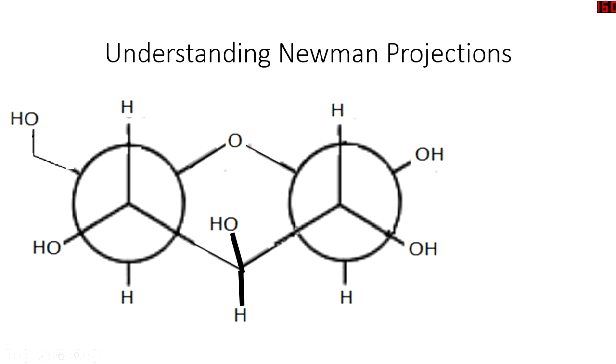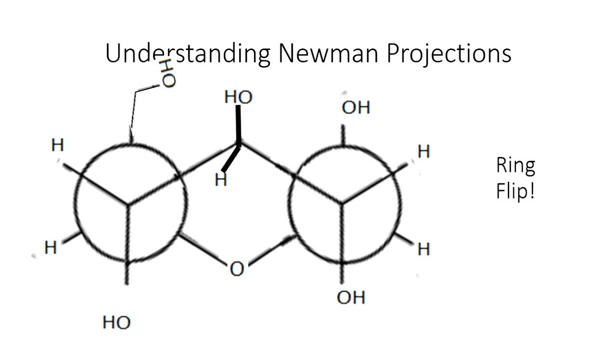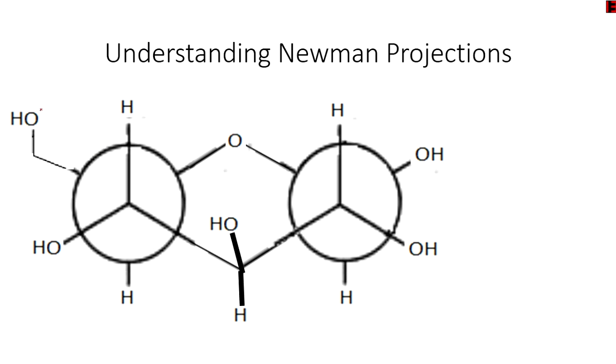Now watch where those go. So the hydrogens are axial, watch where they go. They're now equatorial. And our previously equatorial group here, here, here, and here have all become axial.